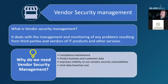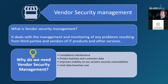Vendor security management deals with the management and monitoring of any problems resulting from third parties and vendors of IT products and other services. We need it for compliance maintenance — most compliance frameworks require vendor security management. We do it to protect our business and customer data, to improve visibility on vendor security vulnerabilities, and to limit data breaches. If you know what your vendor is doing and whether they are following security guidelines, you will know what risks they might impose to your business depending on their criticality.